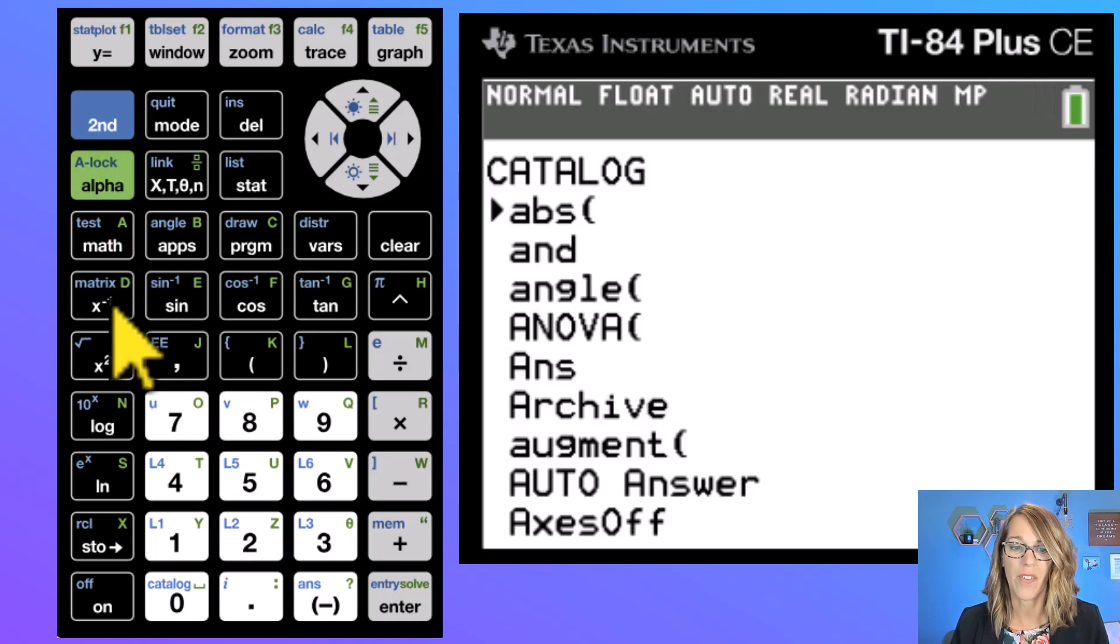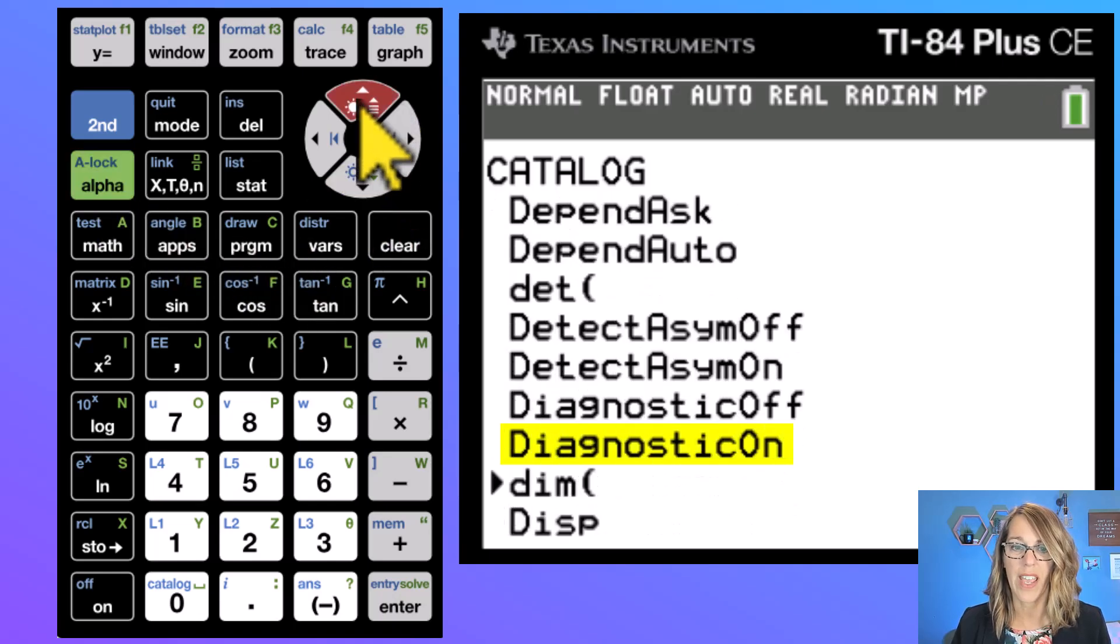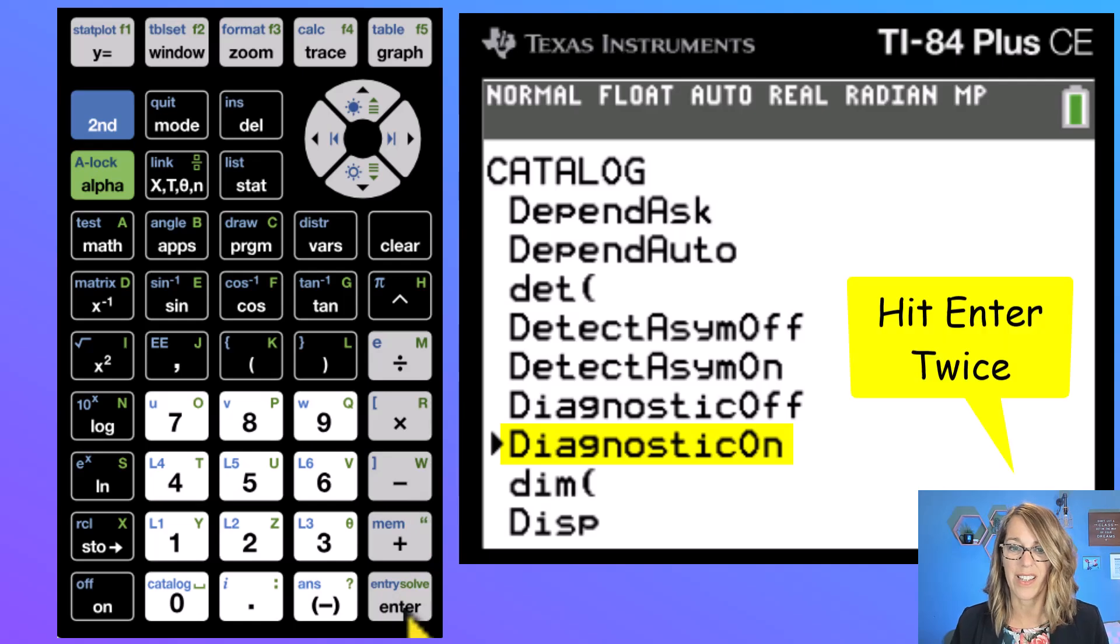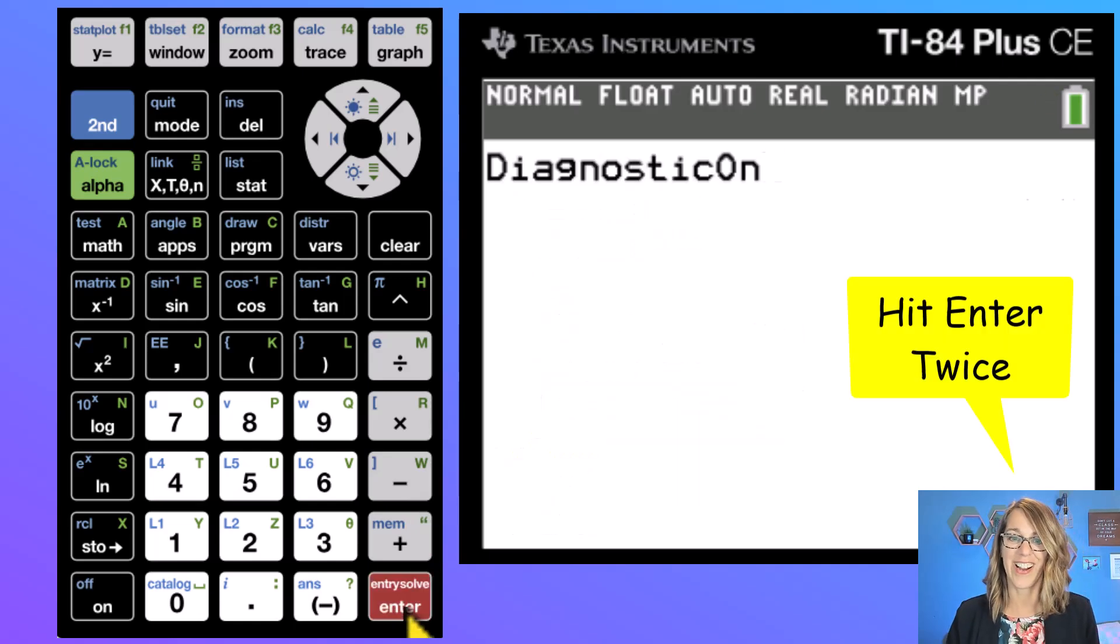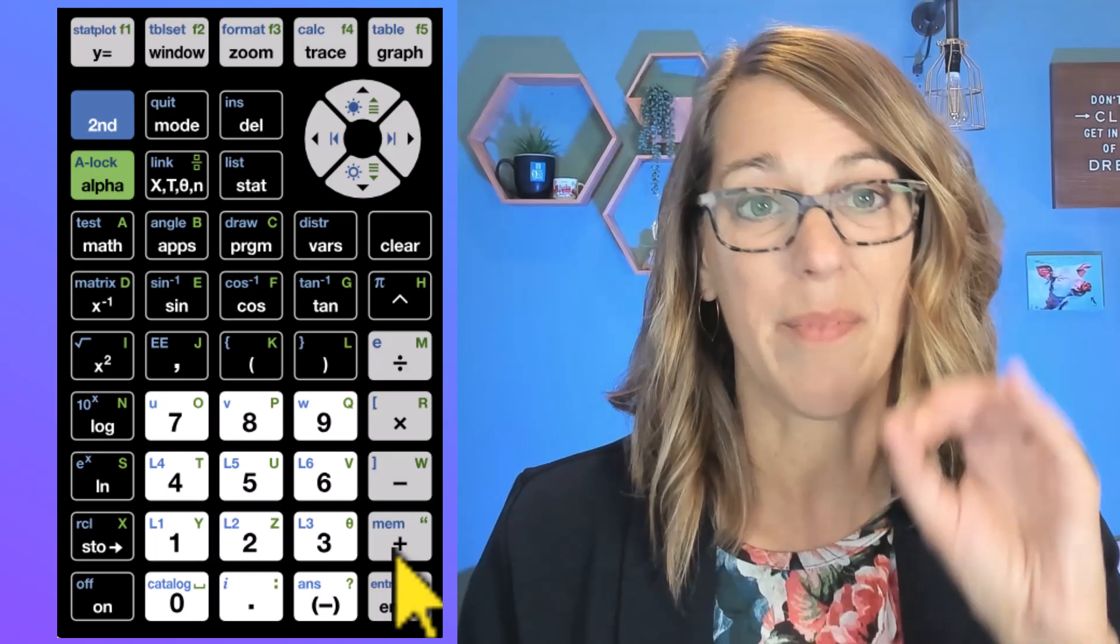So now I'm here in my d's. Let's just scroll through until we get to diagnostic on. There it is. So it's a little bit hidden there and it's just going to tell you done. Once you've done this you are set and it will show you that correlation coefficient every time. Let's rerun that linear regression.